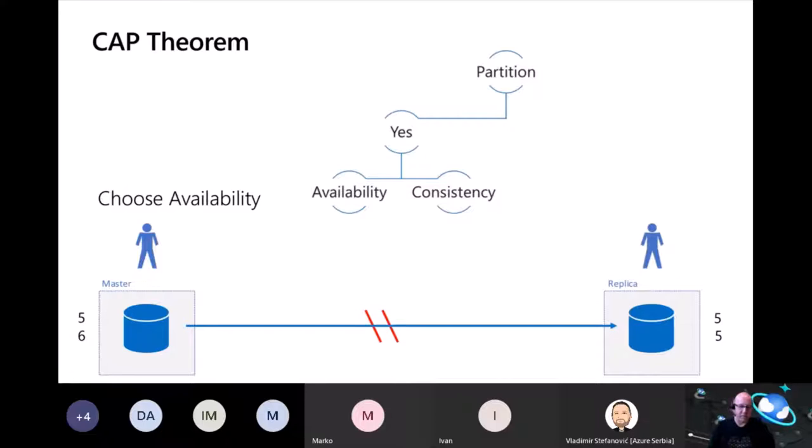Now let's flip this and choose consistency for the system. When the network is working fine, I write five in the master and faithfully replicate five to the replica. But if we cut the network connection, because I am optimizing for consistency, if I try to write more data, I must return an error. I cannot commit the data globally, so I cannot remain consistent.